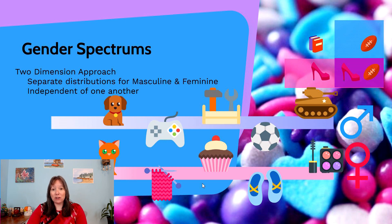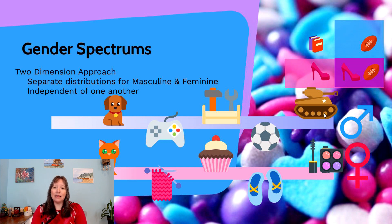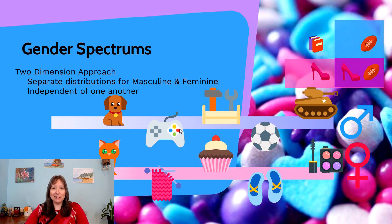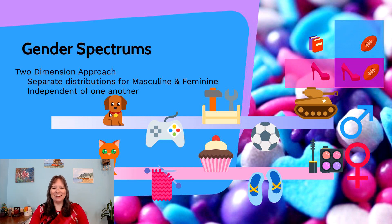A two-dimension approach allows two spectrums: a spectrum of masculinity and a spectrum of femininity. On the masculinity spectrum, people on the high end may enjoy military activities, sports, and working with tools. Moving along, gamer geeks might still be considered masculine but perhaps not as much as jocks — though this is culturally derived. So you find your placement on the masculine spectrum, and maybe you like puppy dogs, which in this culture tends to be associated with masculinity.